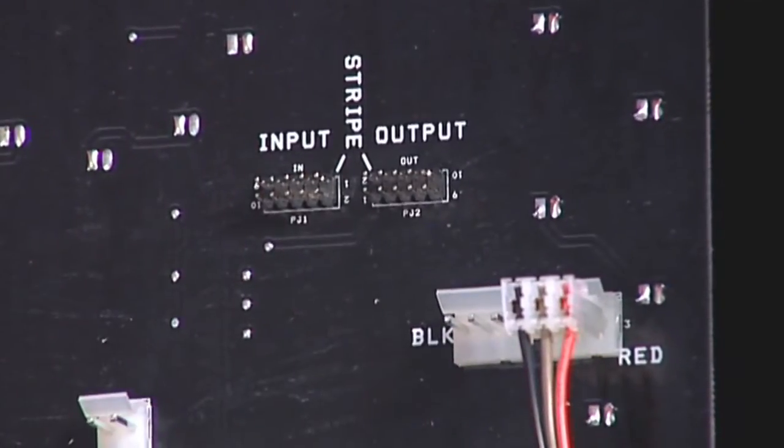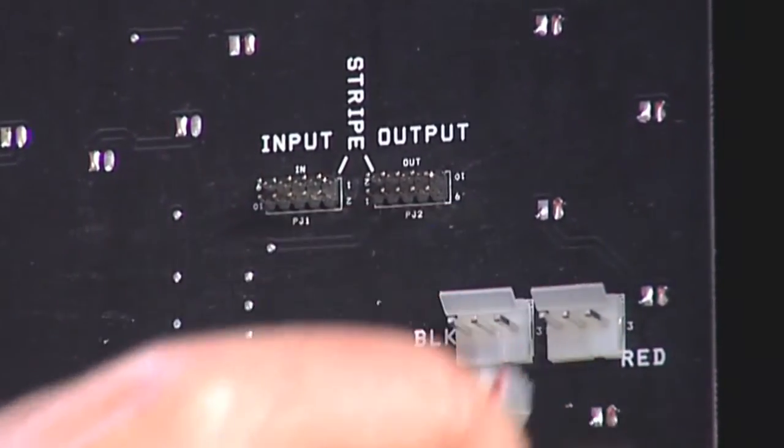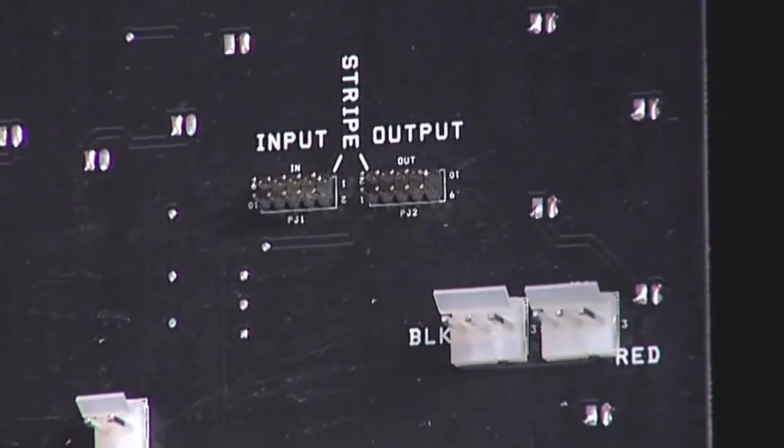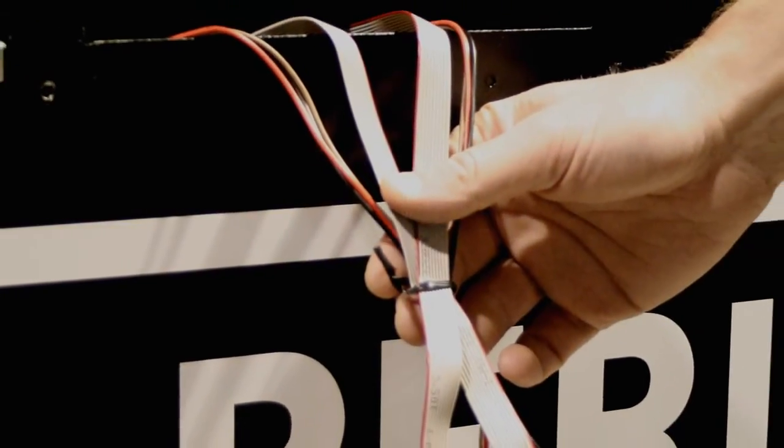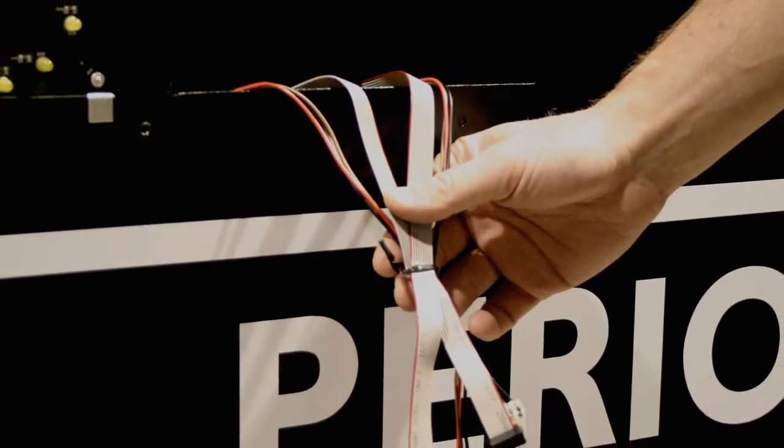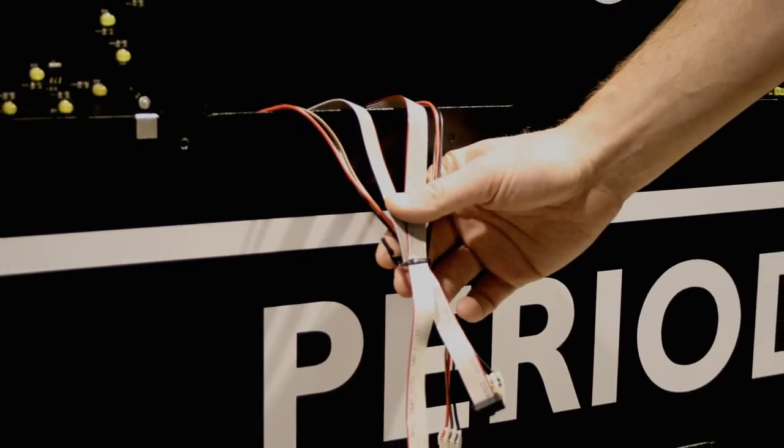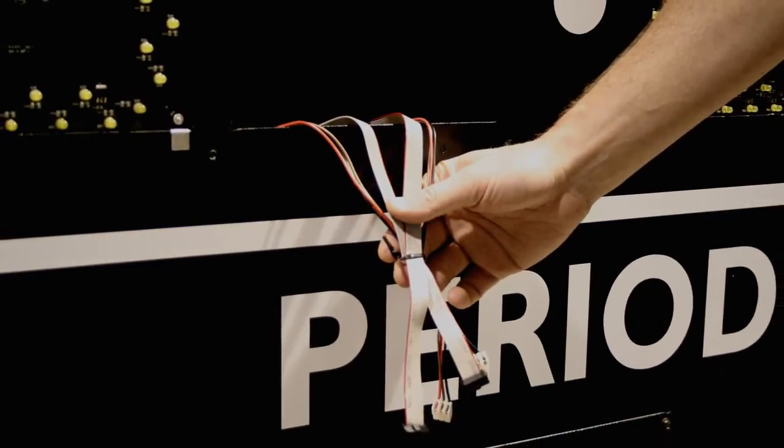You may need to label each cable to ensure you correctly reattach each cable. Twist tie all of the cables you remove from the digit into a bundle. Do not allow these bundled cables to drop down into the inner cabinet of the scoreboard.